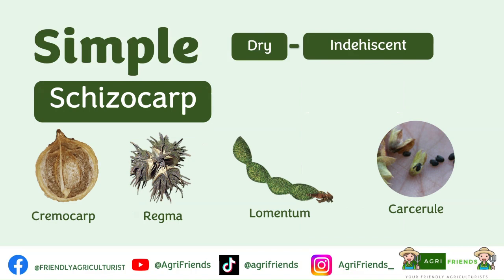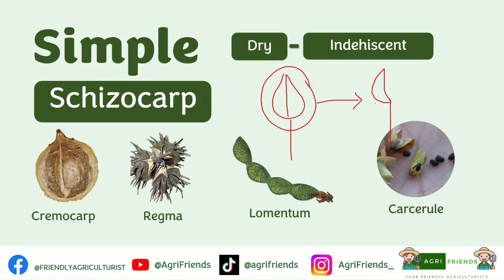The first type is the cremocarp, a two-seeded schizocarpic fruit. At maturity they separate but remain attached on a common axis called the carpophore. For example, this is your cremocarp — at maturity this fruit will split into two, with this common axis being the carpophore, and each half is called a mericarp.